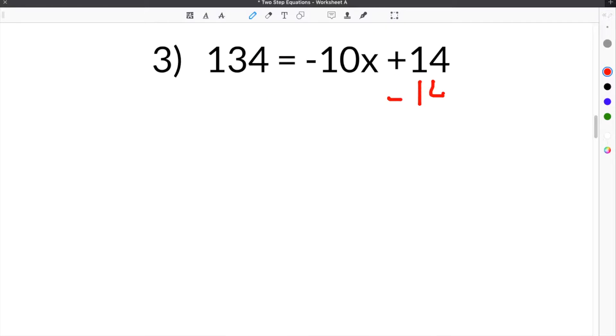So we're going to subtract 14 here because the opposite of plus 14 is minus 14. Whatever you do to one side, you also have to do the other, so we're also going to subtract 14 from this side. These will cancel. Over here we have 134 minus 14, which is 120, equals negative 10x, so you bring that straight down.